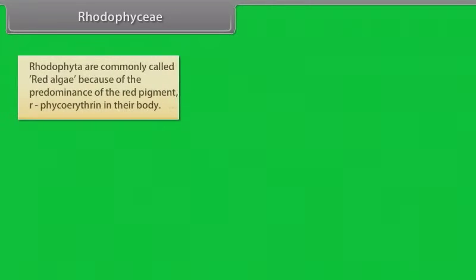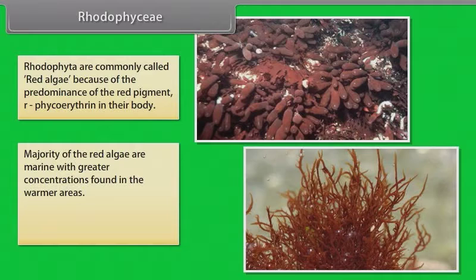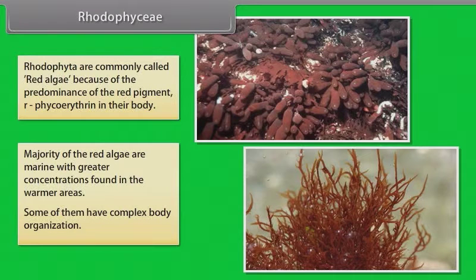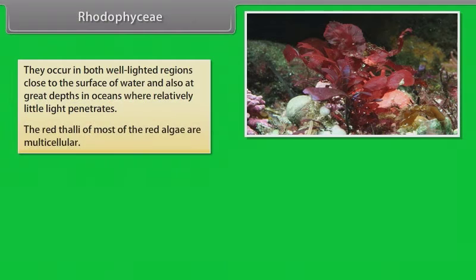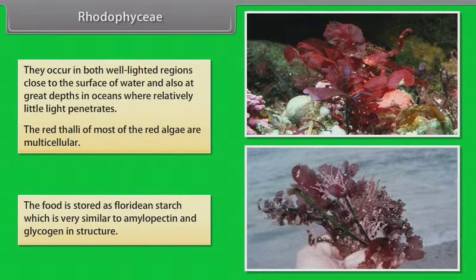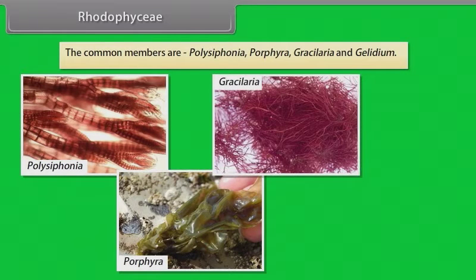Rhodophyceae. Rhodophyta are commonly called red algae because of the predominance of red pigment, phycoerythrin, in their body. Majority of red algae are marine with greater concentrations found in the warmer areas. Some of them have complex body organization. They occur in both well-lighted regions close to the surface of water and also at great depths in oceans where relatively little light penetrates. The red thalli of most of the red algae are multicellular. The food is stored as floridean starch which is very similar to amylopectin and glycogen in structure. The common members are Polysiphonia, Porphyra, Gracilaria and Gelidium.